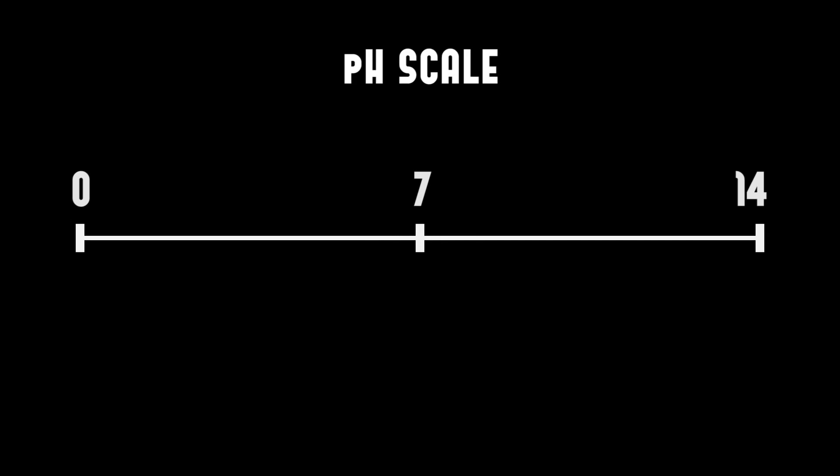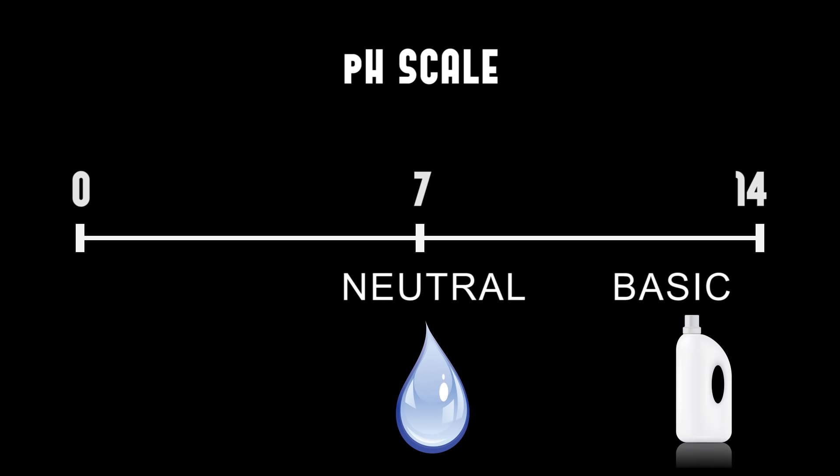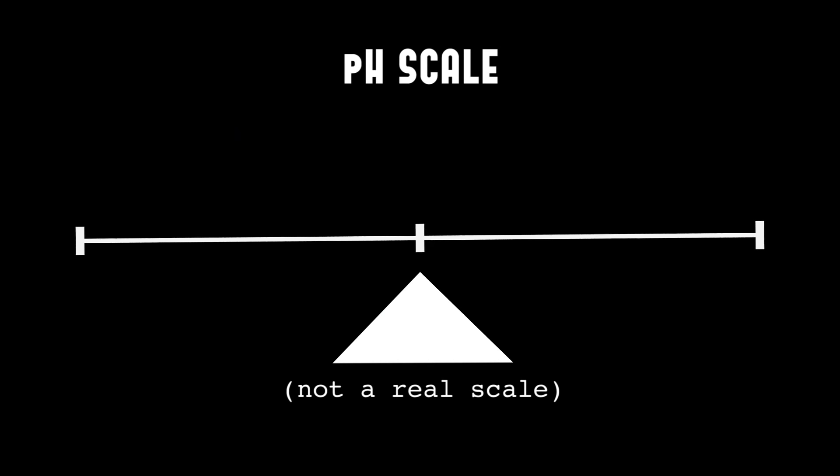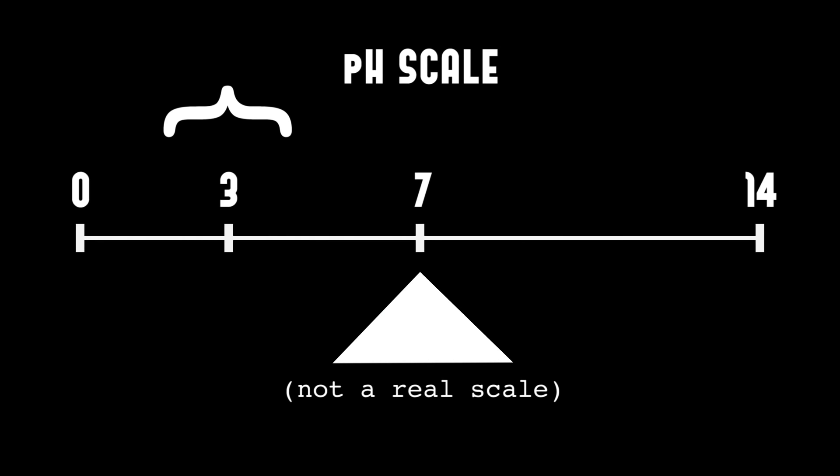pH is how basic or acidic a liquid is. pH is measured on a scale of 0 to 14, where 7 is neutral, like water. 14 is most basic, like bleach, and 0 is most acidic, like the blood of an alien. Most beverages will fall around 3, which is acidic enough to prevent microbial growth.